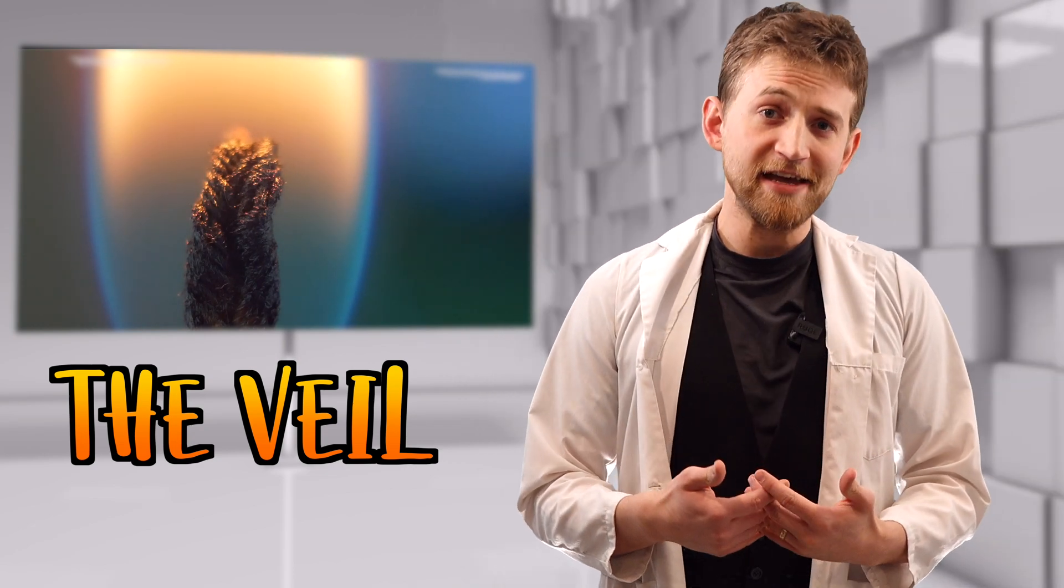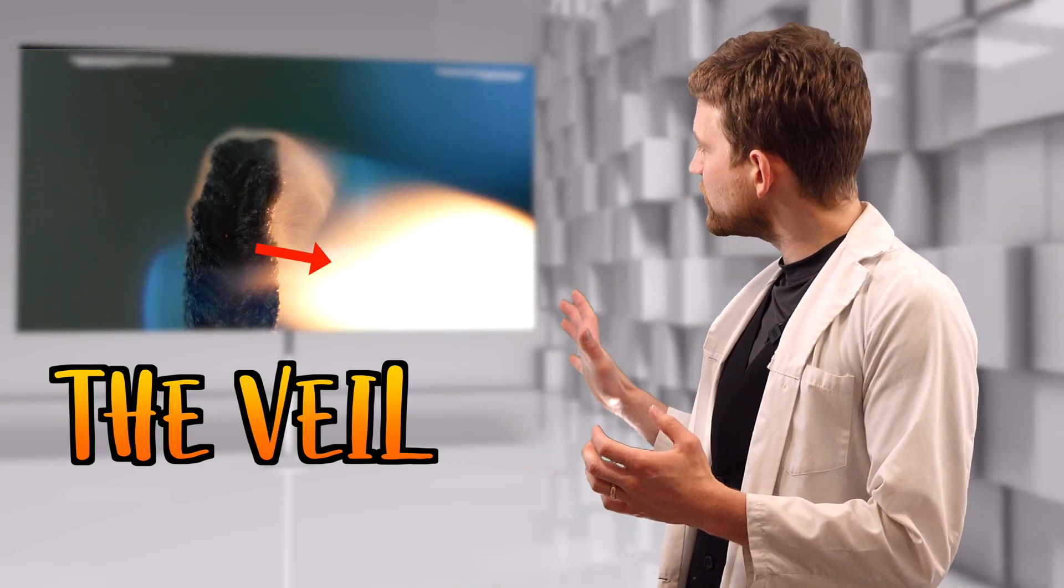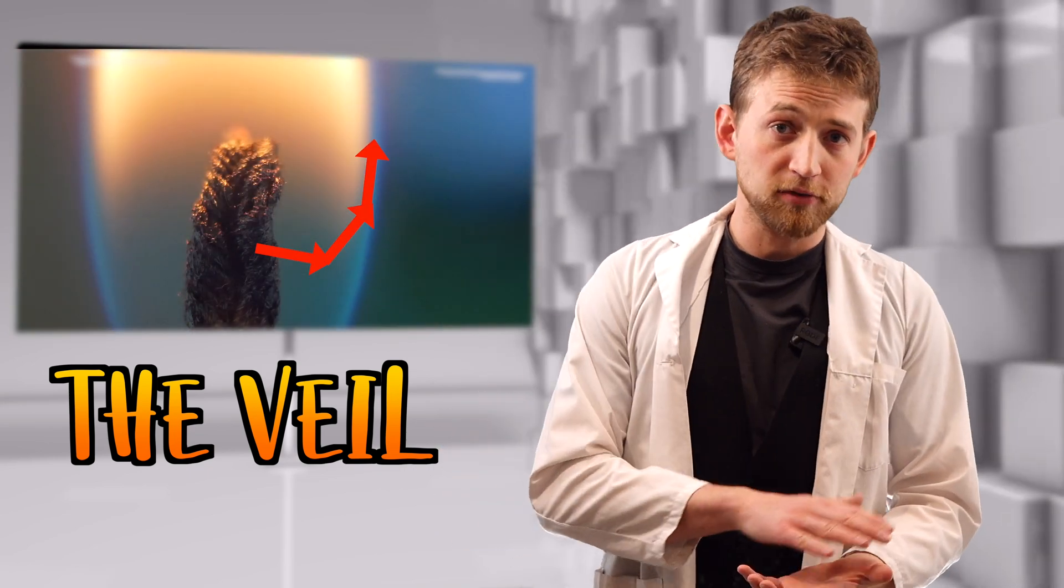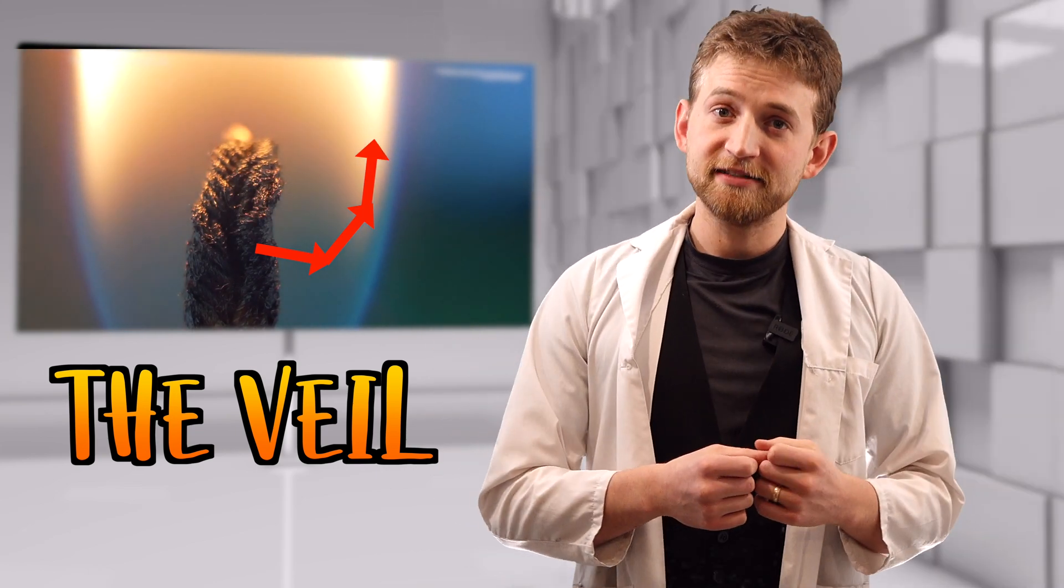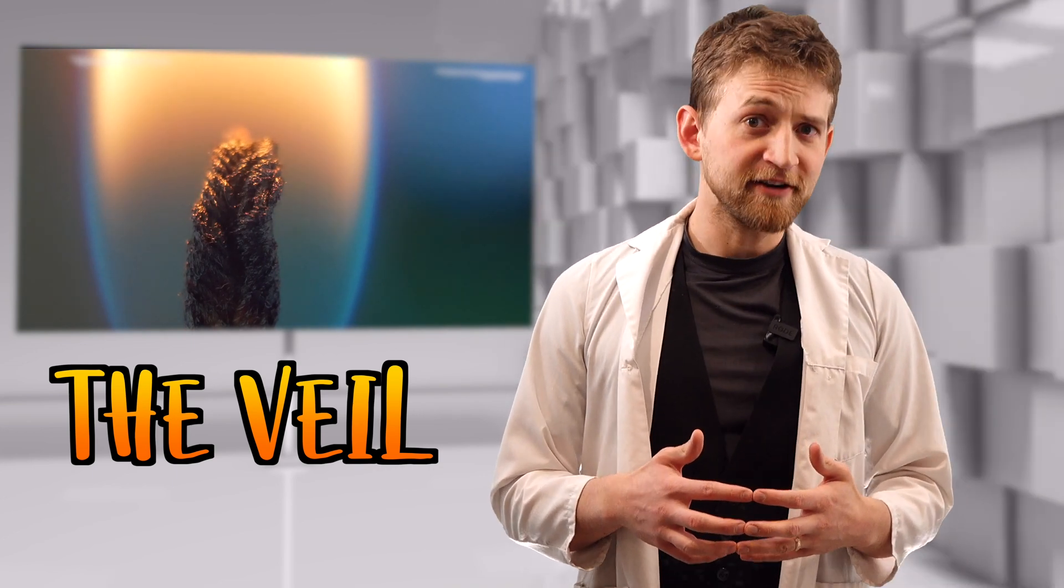Now there is technically a fourth layer of the candle that doesn't really match any of the characteristics of the other ones. It's called the veil. And that's that kind of bluish color that extends from the bottom blue layer and kind of up the sides. That's because there is more oxygen on the outside of the candle flame than the inside, so then it burns hotter. And that veil is the hottest part of the candle flame, which can reach up to 1400 degrees Celsius, which is very, very hot.